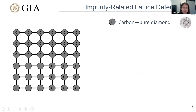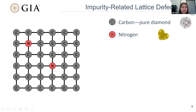Now looking at impurity-related defects, where we swap carbon atoms for other elements. Starting with nitrogen: nitrogen is one of the most abundant elements in the universe, its atom size is very similar to carbon, so it loves going into diamond at very high concentrations. The simplest nitrogen defect is single isolated nitrogens, and that can impart a very vibrant canary-yellow color to the diamond.